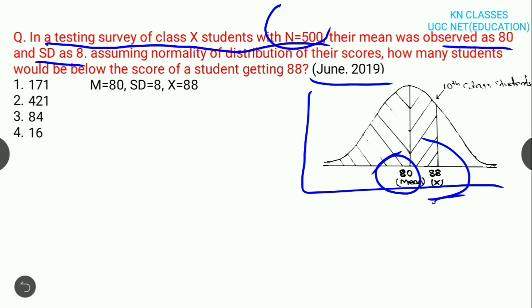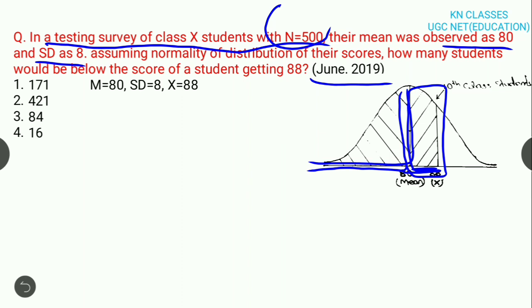Look here. The mean is 80 and score x is 88. Here we have to find out below the score 88. You know that half of the curve is 50 percent. We have to find this part from the score 88 to the mean 80. Whatever answer we get, we will add to 50%.